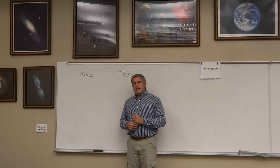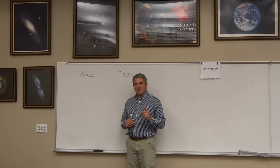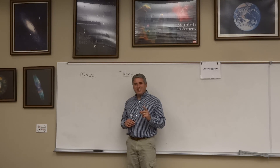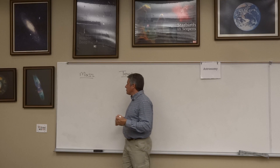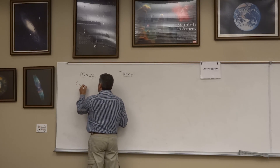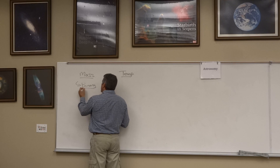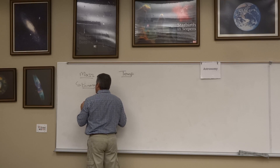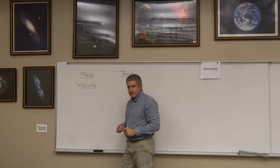It turns out we're in luck. More than half the stars in the universe are binary stars — two-star systems. So we can actually watch one orbit the other. By studying binary star systems, we can study their orbits and therefore figure out their masses.